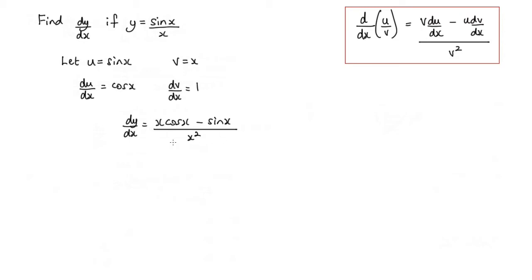Now we can actually simplify this a little bit. We write it as two separate fractions: we have x cos x over x squared minus sin x over x squared.